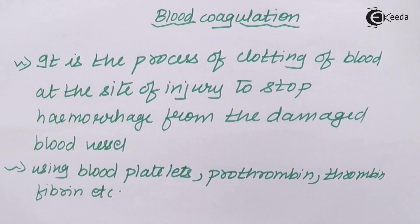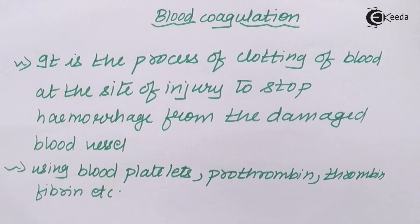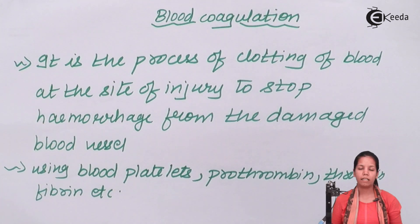Now, when there's an injured tissue present inside your body, prothromboplastin or thromboplastin gets activated. Once thromboplastin is activated, blood platelets are also associated and get incorporated into that tissue. Both thromboplastin and blood platelets together form prothrombinase.